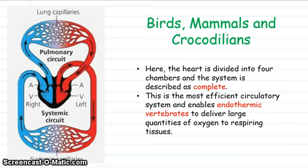Finally we get to birds, mammals, and crocodilians. This is a complete circulatory system where there is no mixing of the oxygenated and deoxygenated blood, meaning oxygen delivery is very efficient to the tissues. This allows for an endothermic physiology in those animals, meaning they are able to generate high levels of energy in the respiring tissues.